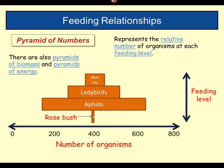We could also have a pyramid of biomass. If this were a pyramid of biomass, it would be much clearer — a rosebush obviously has a mass much greater than the aphids. Similarly, in a pyramid of energy, the energy would be much bigger in the rosebush than in the aphids. So these are pyramids of numbers, but we can also look at pyramids of biomass and pyramids of energy.